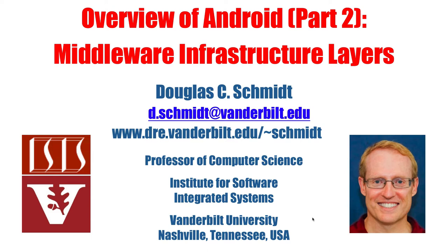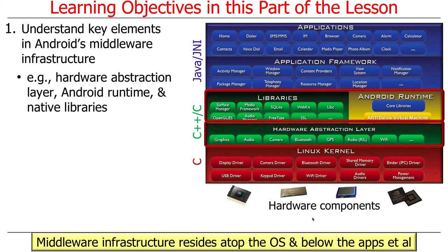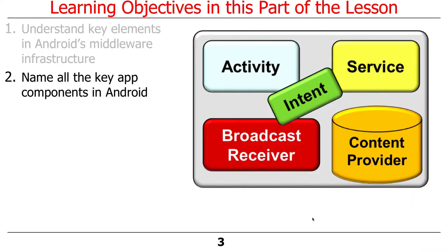Now we're going to keep marching up the stack and talk about what I call the middleware infrastructure layers. You can think of middleware as basically the layers of software that sit on top of the operating system and the hardware, but below the various apps. There are a bunch of different sub-layers in the middleware infrastructure layer.